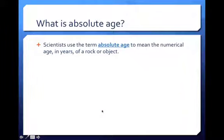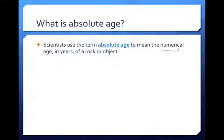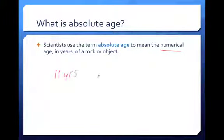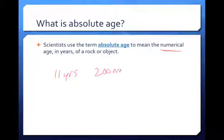The first thing we're going to talk about is what is an absolute age. Scientists use the term absolute age to mean the numerical age of a rock or an object. Examples would be, if someone asks you how old you are, you may say 11 years old. If I ask you how old a rock is, you might say 200 million years old. These are all numerical values — absolute ages. What we're really focusing on today is how do we know these absolute ages.